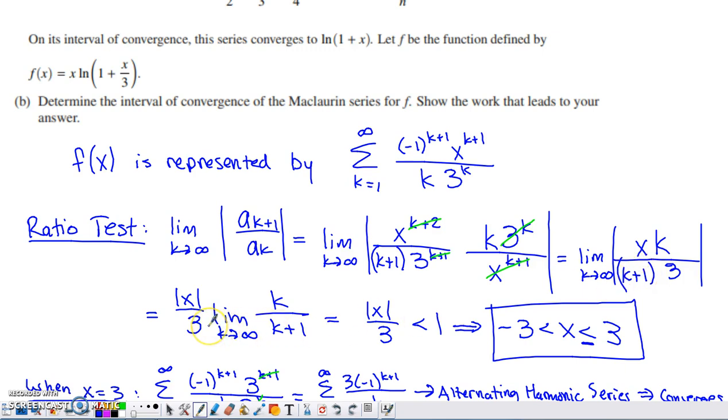I next factored out anything that didn't have a k attached to it anymore. x is unaffected by k, so I factored out x, but I kept the absolute values around the x. x might be positive, x might be negative, so I kept it inside the absolute values. The 3 is unaffected by k, so I also factored out the 3. I don't need the absolute values around it. It's already a positive 3, so that'd be redundant.